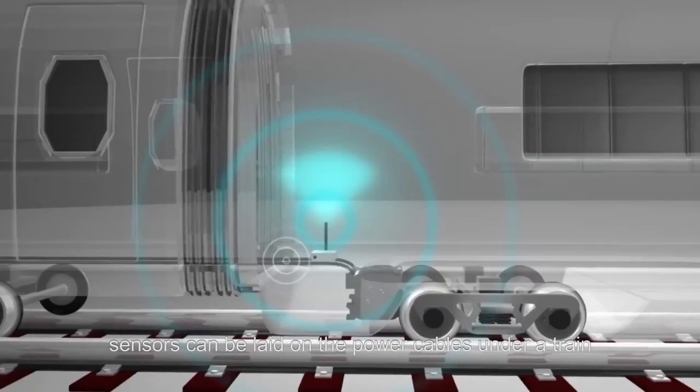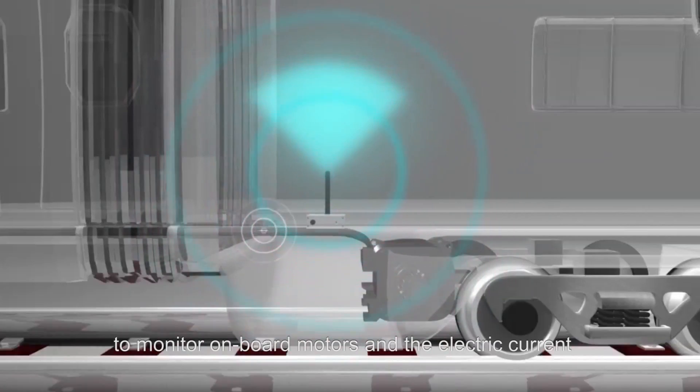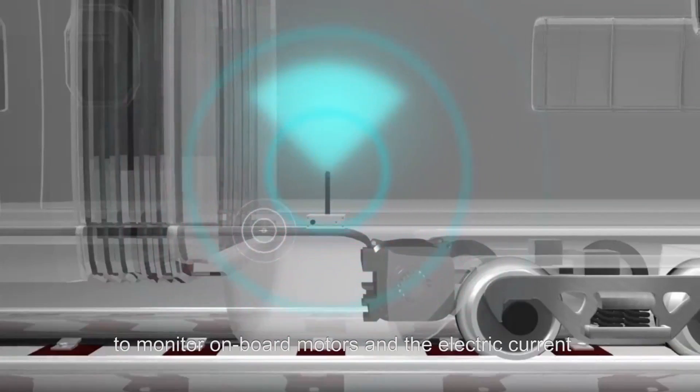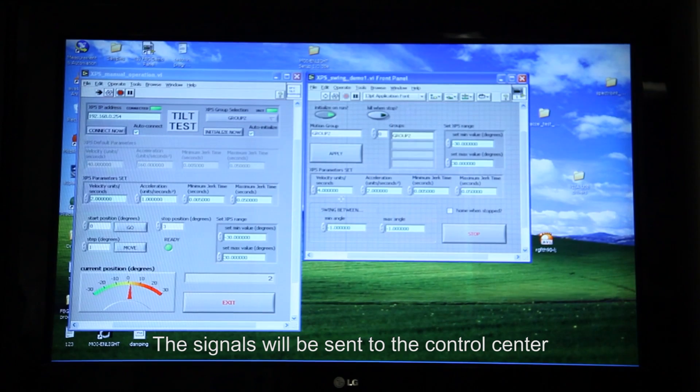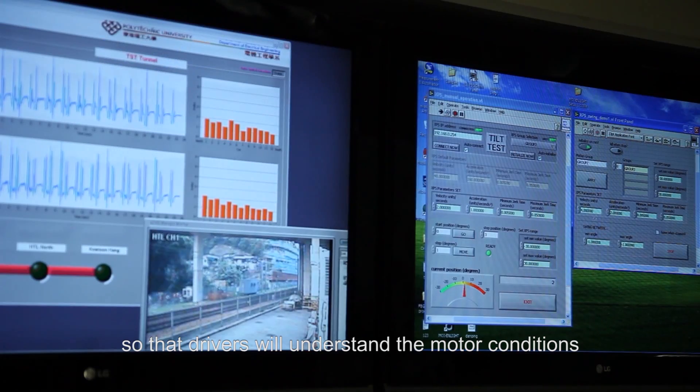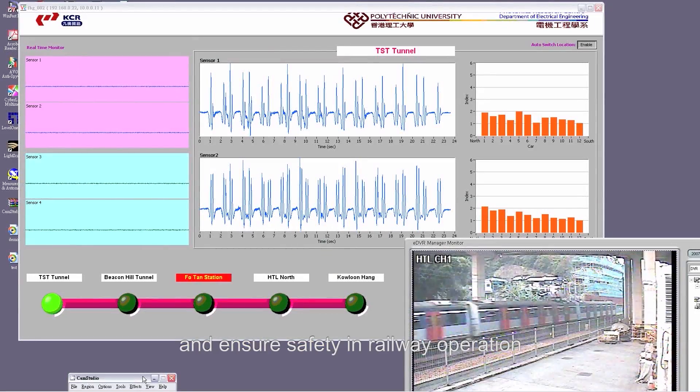For example, sensors can be laid on the power cables under a train to monitor on-board motors and the electric currents flowing through for any abnormalities. The signals will be sent to the control center so that drivers will understand the motor conditions and ensure safety in railway operation.